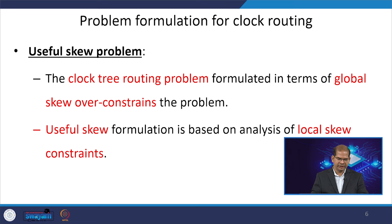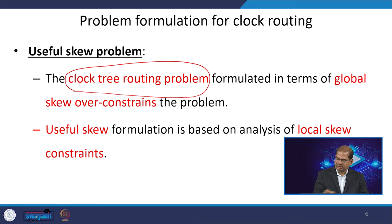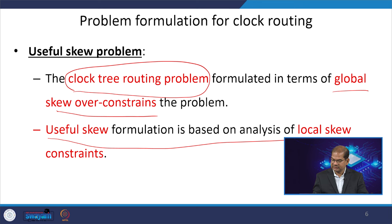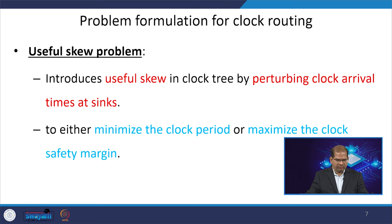Now we have the useful skew problem. When looking at the clock tree routing problem, if you use the global concept of optimizing the skew, it is not a good idea. The useful skew information is based on analysis of local skew constraints. We need to look into the local skew constraint while analyzing the skew, instead of dealing with it as a global problem.